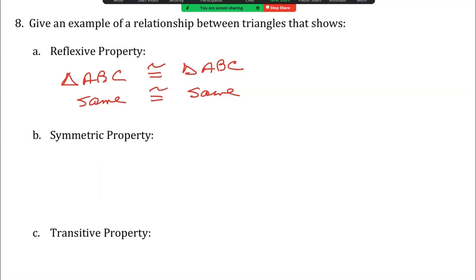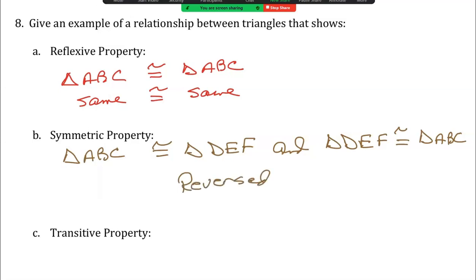The next one is symmetric property. An example would be triangle ABC is congruent to triangle DEF, and then the symmetry would be triangle DEF is congruent to triangle ABC. What I did was I reversed the order.